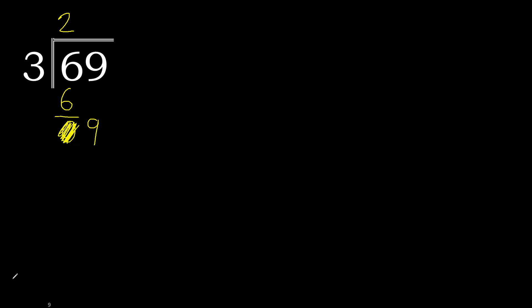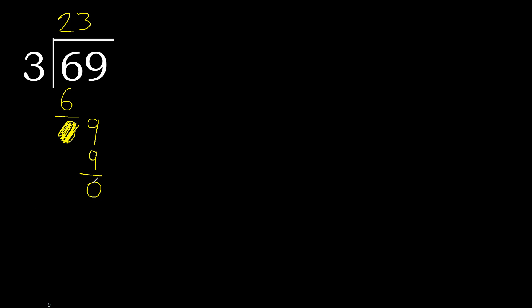Always eliminate zeros on this side. 9 — 3 multiplied by which number? 3 multiplied by 3 is 9, exact. 9 minus 9 is 0. That is remainder 0, therefore the remainder is 0.